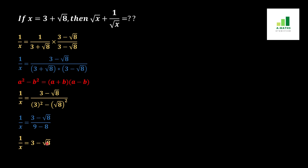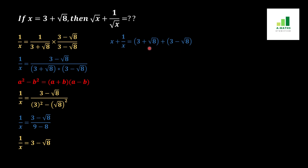In step number 2, we find the value of x plus 1 over x. The value of x is 3 plus under root 8 from the question, and the value of 1 over x is 3 minus under root 8. Adding these together, the plus under root 8 and minus under root 8 cancel out, and we get x plus 1 over x equal to 6, because 3 plus 3 is 6.